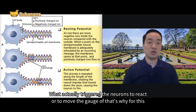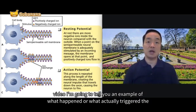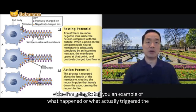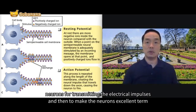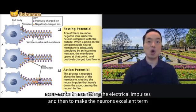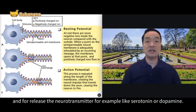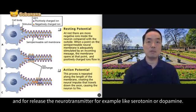For this video, I'm going to tell you with an example what happens — what actually triggers the neurons for transmitting the electrical impulses and then to make the neurons determine whether to release the neurotransmitter, for example like serotonin or dopamine.